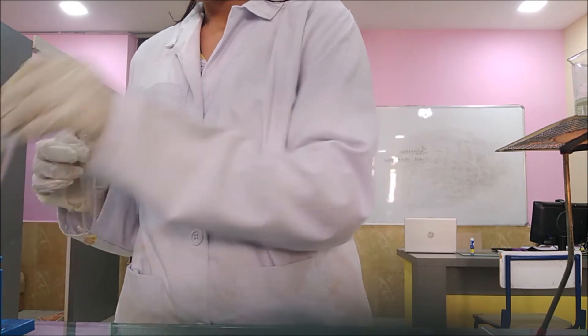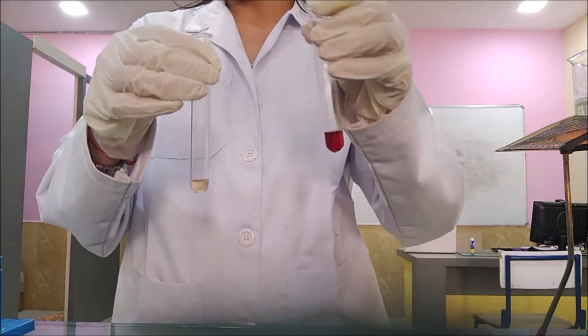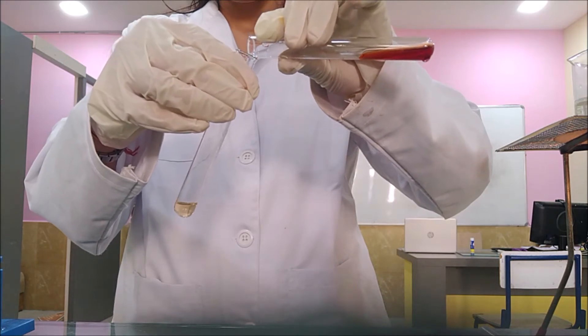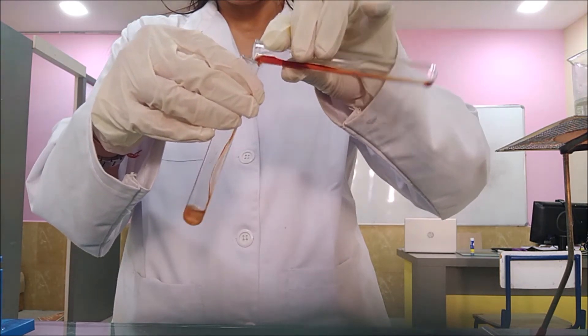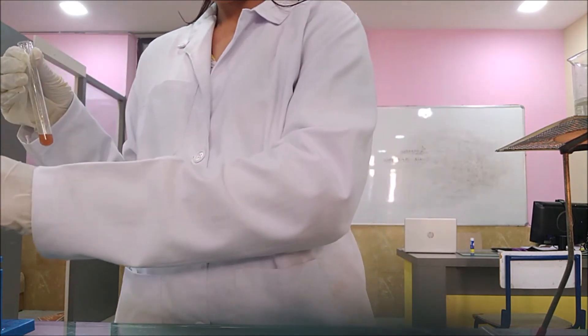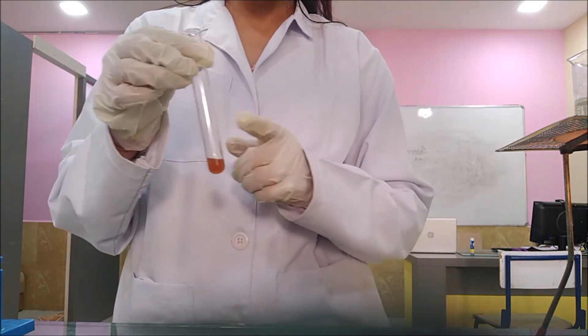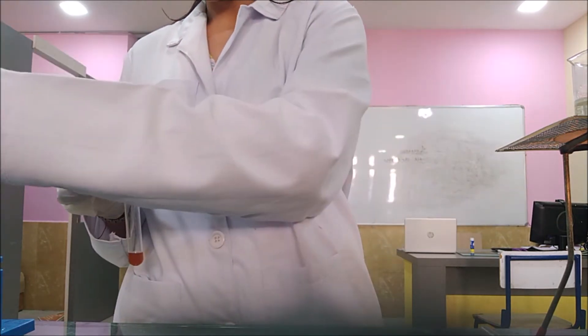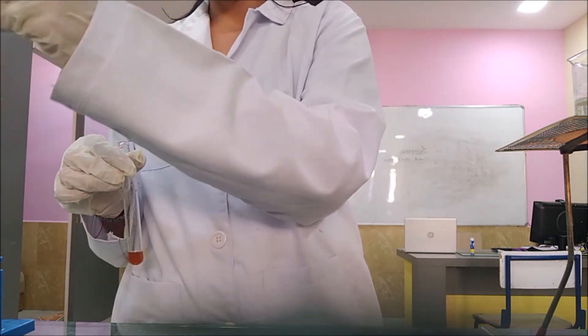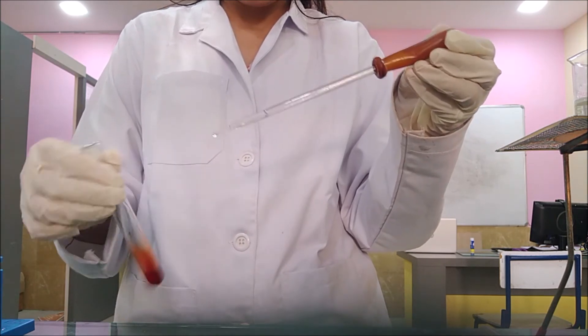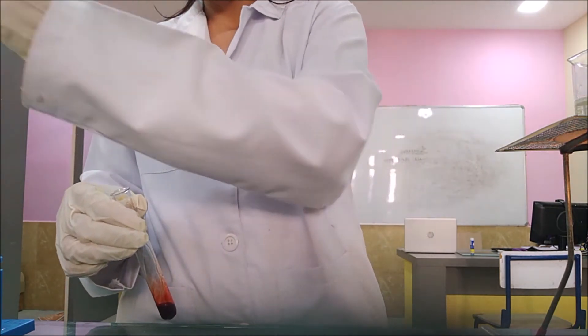Now add around 2-3 drops of Sodium Nitroprusside in your organic compound. Shake it well. Now add around 1-2 drops of NaOH. Shake it well.